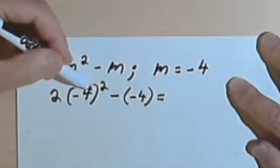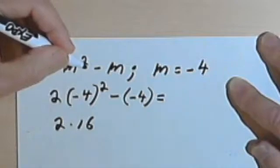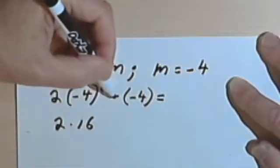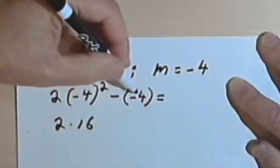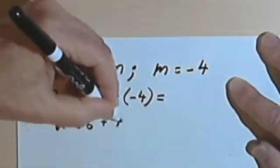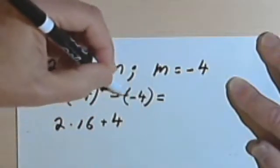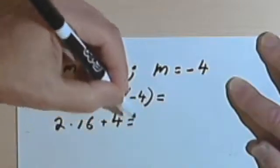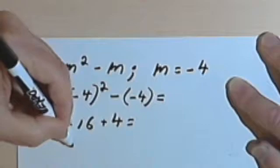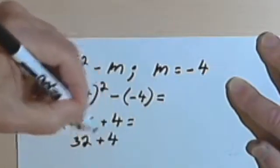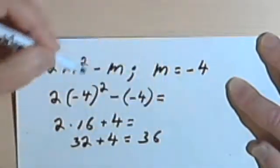2 times 16 — let's do this in steps. So this will be 2 times 16, then I've got minus negative 4. Minus a negative is like negative times negative, and that's going to be a positive. So these two negative signs will combine to make a positive 4. Now we can multiply 2 times 16, that's 32. So I've got 32 plus 4, and 32 plus 4 is 36.